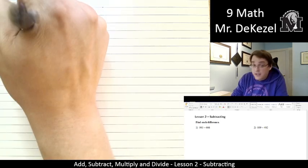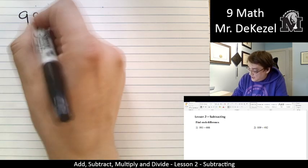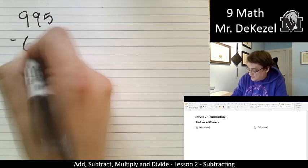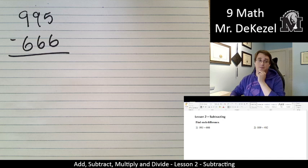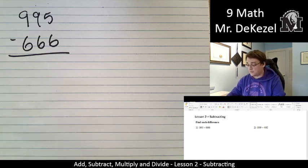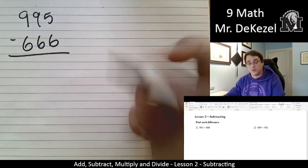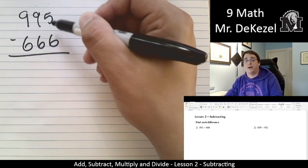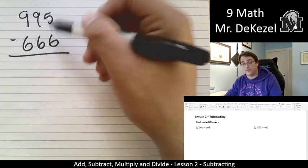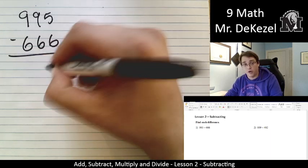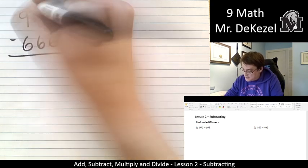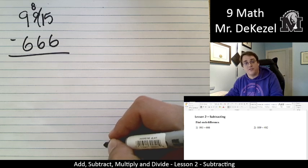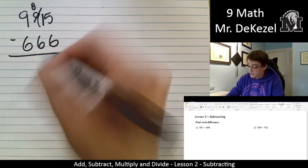So the first one, 995 subtract 666. We set it up like an addition question, but we have a subtraction sign and we're going to subtract them from each other. We run into a problem immediately where we cannot subtract six from five. So we're going to borrow. Yes, we're going back to borrowing. We cross this out and this becomes an eight and we borrow 10 to make this 15. 15 minus six we can do.